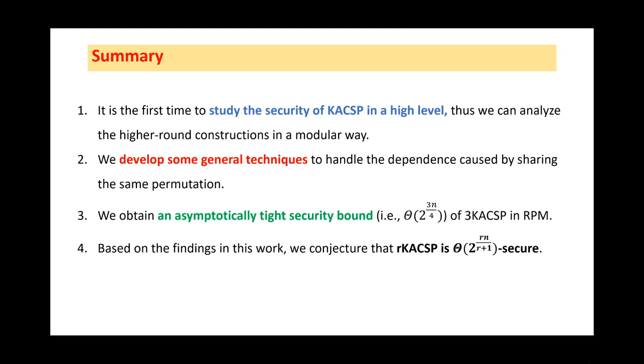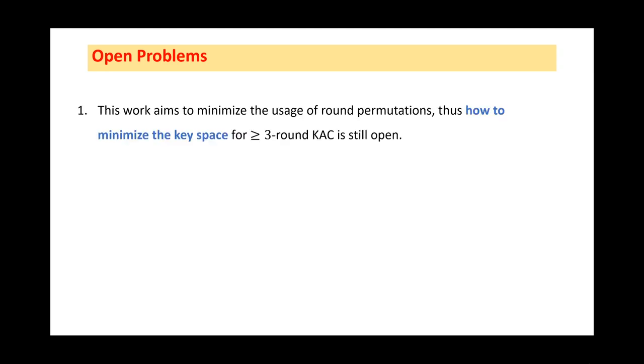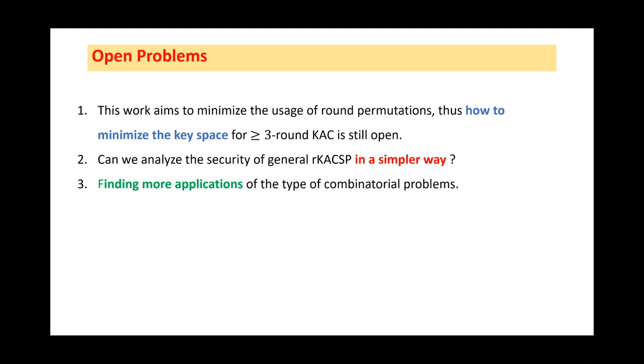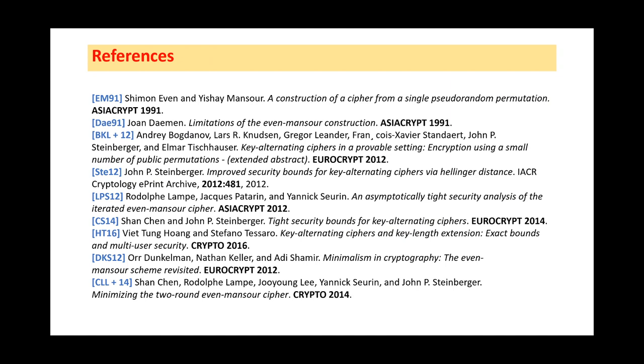First of all, based on the findings in this work, we conjecture that rKACSP has the same security level with the rKAC. At the end of this talk, we leave some open problems. This work aims to minimize the usage of random permutations. Thus, how to minimize the key space is still open. Secondly, following our methodology, the proof for higher-round cases would be very involved. Thus, it is interesting to find a simpler way to analyze the general rKACSP. Third, we introduce a type of combinatorial problems in this work. And such problems seem to be rather general. So, we hope to find more applications for them. Okay, this is everything I wanted to say. Thank you very much for your listening.